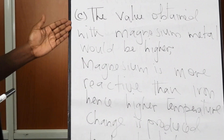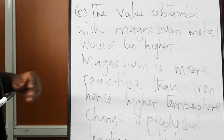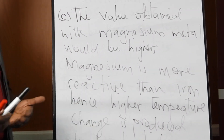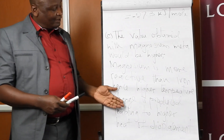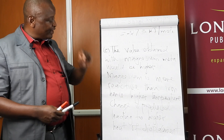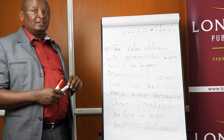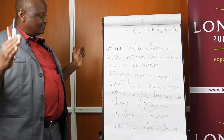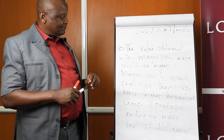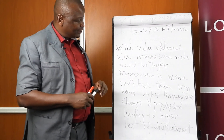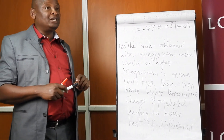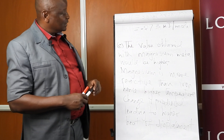In part C, comparing magnesium versus iron: because magnesium is more reactive than iron, there will be a larger change in temperature, and therefore the heat of displacement will be greater when magnesium is used compared to iron, due to the difference in reactivity between the two metals.